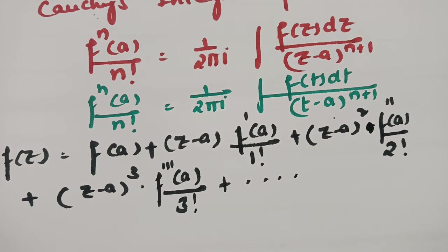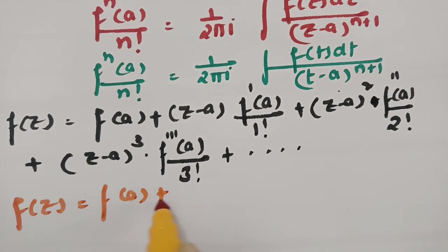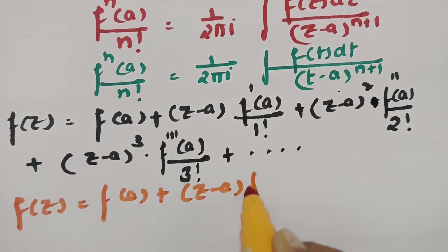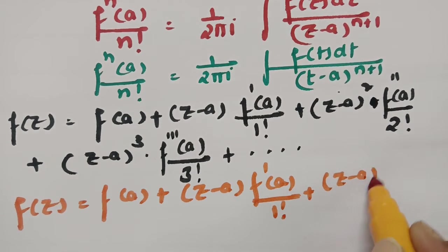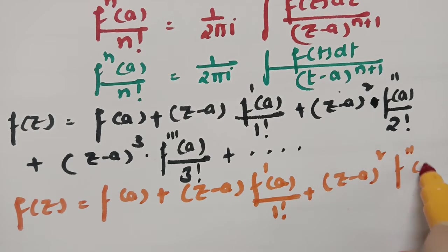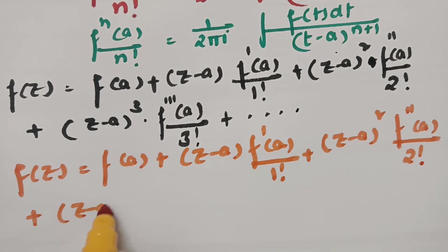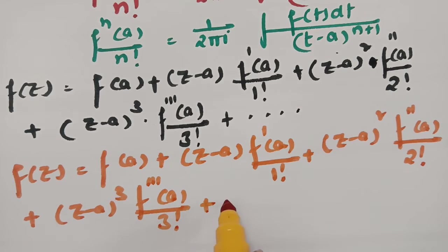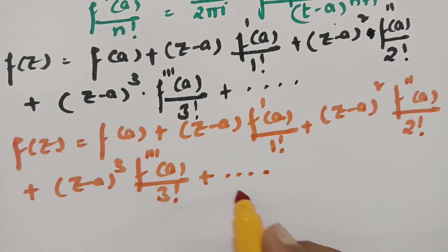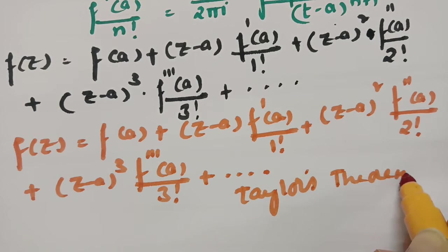So this is nothing but f of z equals f of a, plus z minus a into f dash of a by 1 factorial, plus z minus a whole squared into f double derivative of a by 2 factorial, plus and so on — which is nothing but Taylor's theorem.